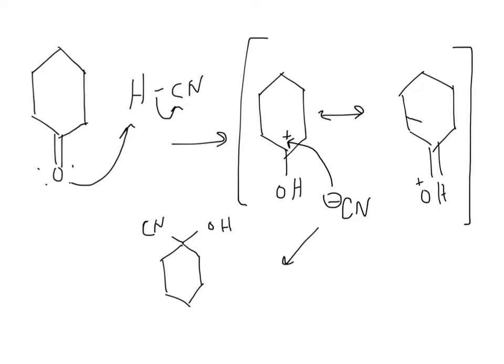The lone pairs on the oxygen in the product attack the hydrogen on hydrogen cyanide, and then the lone pairs from the hydrogen-carbon bond go to the carbon, which makes it negatively charged, and then that negative charge will attack the positive charge in the transition state and create our product.